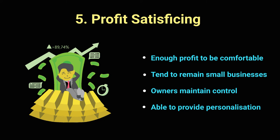Under profit satisficing, the owner makes just enough to have a comfortable life — enough to clothe themselves, provide shelter, have a few vacations, and pay bills. As long as all basic needs are being met, the business is on the objective of profit satisficing. These businesses tend to remain small; typically family businesses and sole trader partnerships would be like this. The owner stays in control of their operations and remains small, retaining control of the business.